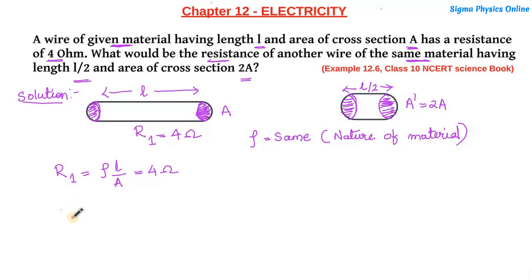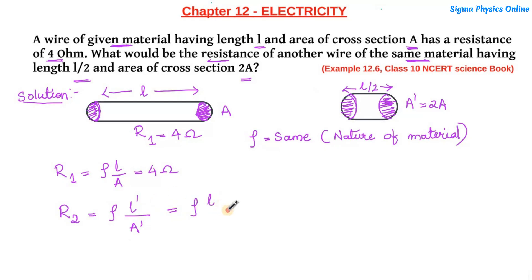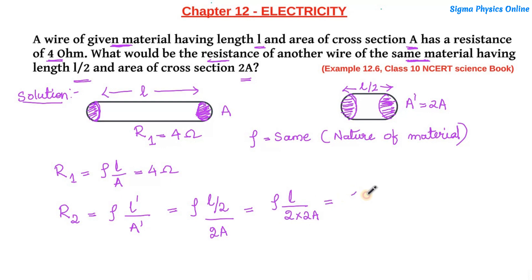Now let's find the resistance of the new wire. R2 is equal to ρ × l'/a', where l' and a' are the new length and the new area of cross section. Now, l' = l/2 and a' = 2a, so we substitute: R2 = ρ × (l/2) / (2a).